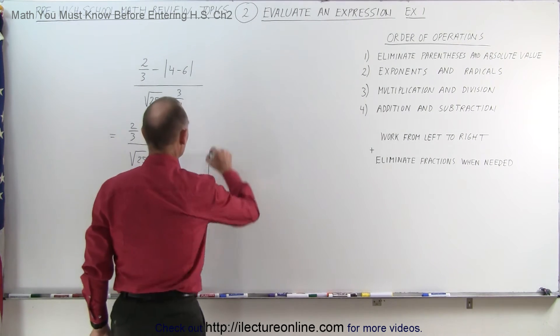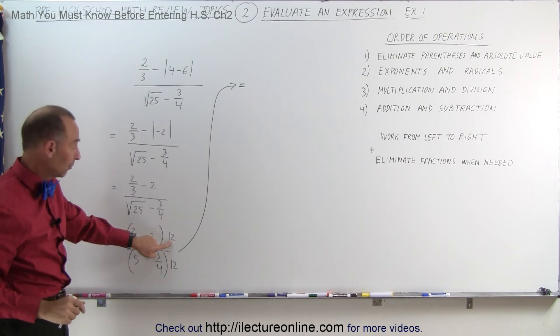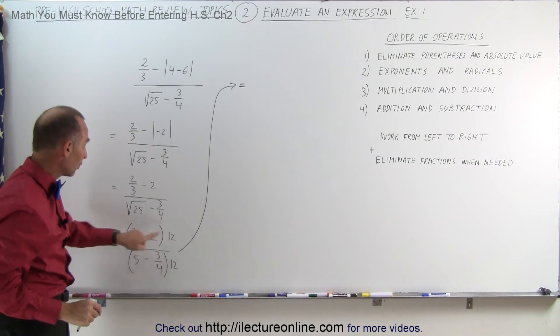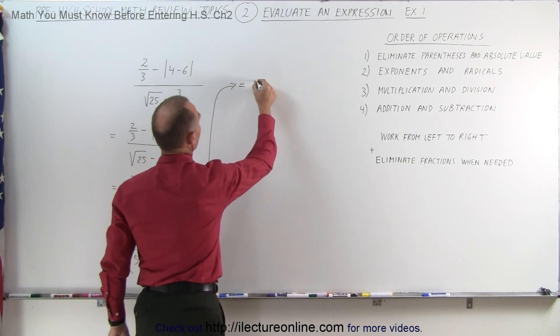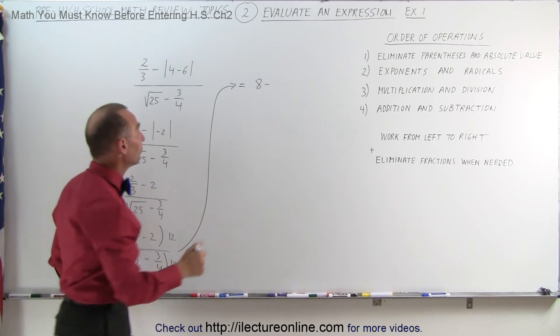Let's see what happens when we do that. So this is equal to, well, 3 goes into 12 four times, so 12 divided by 3 is 4, 4 times 2 is 8, minus -2 times 12 is -24.